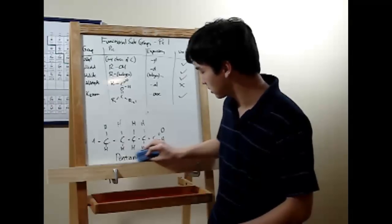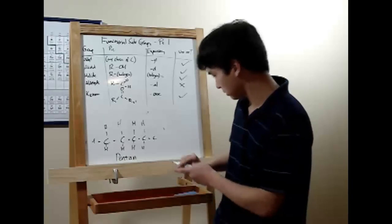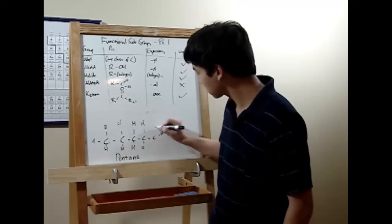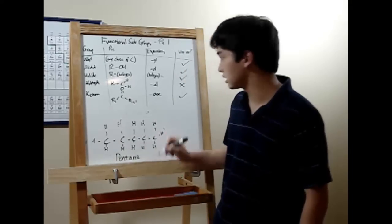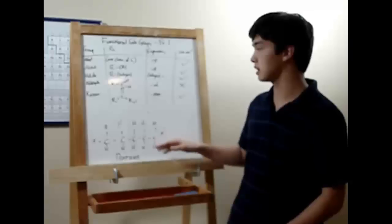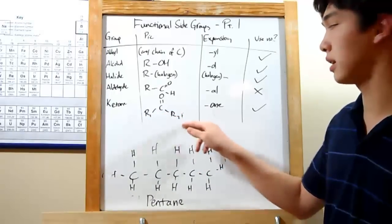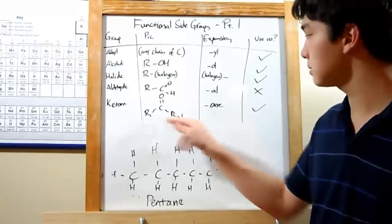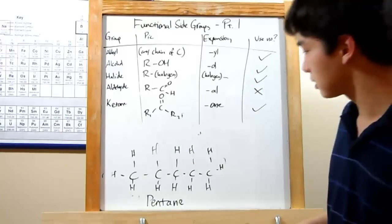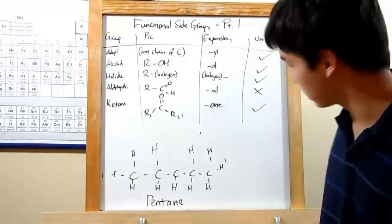All right. Last up is the ketone. But first let's change this back to pentane. The ketone is just a double bonded oxygen somewhere in your molecule. Now I've used R1 and R2 as subscripts. These basically just mean parts of the carbon chain. So let's put a double bonded oxygen right here in the middle.